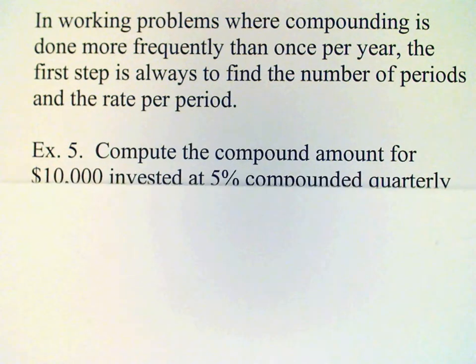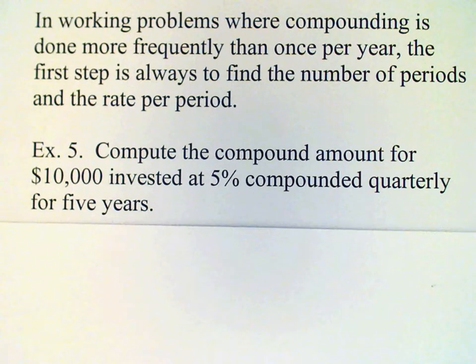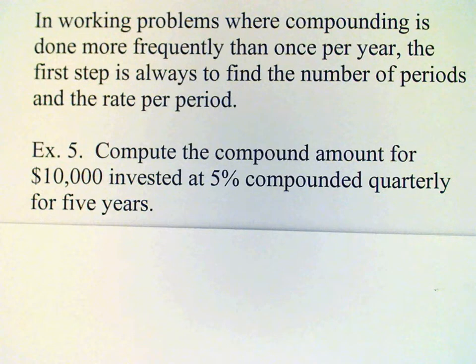For example, we have a $10,000 investment which is invested at compound interest at a 5% annual rate, compounded quarterly for 5 years.